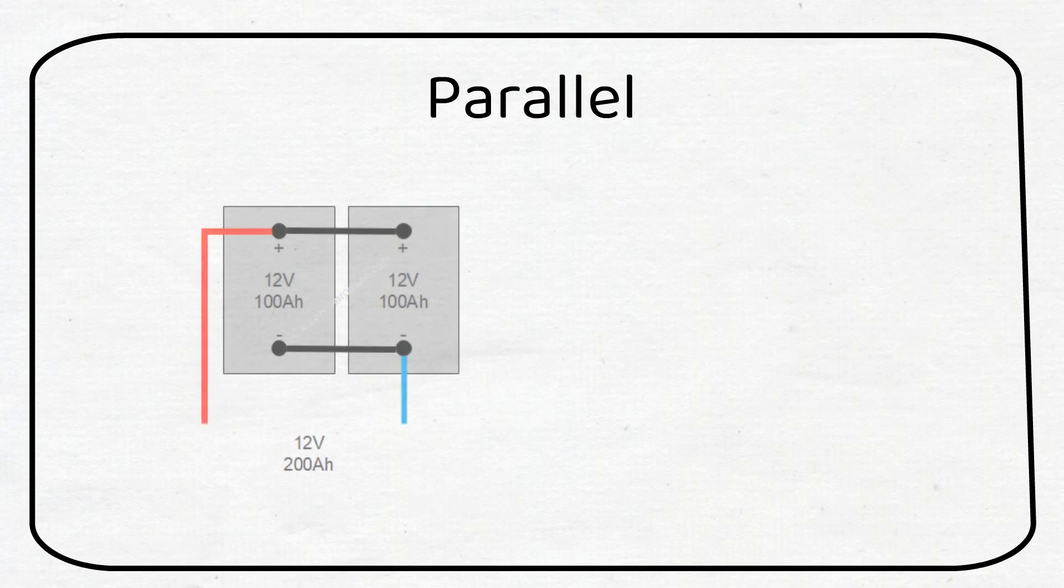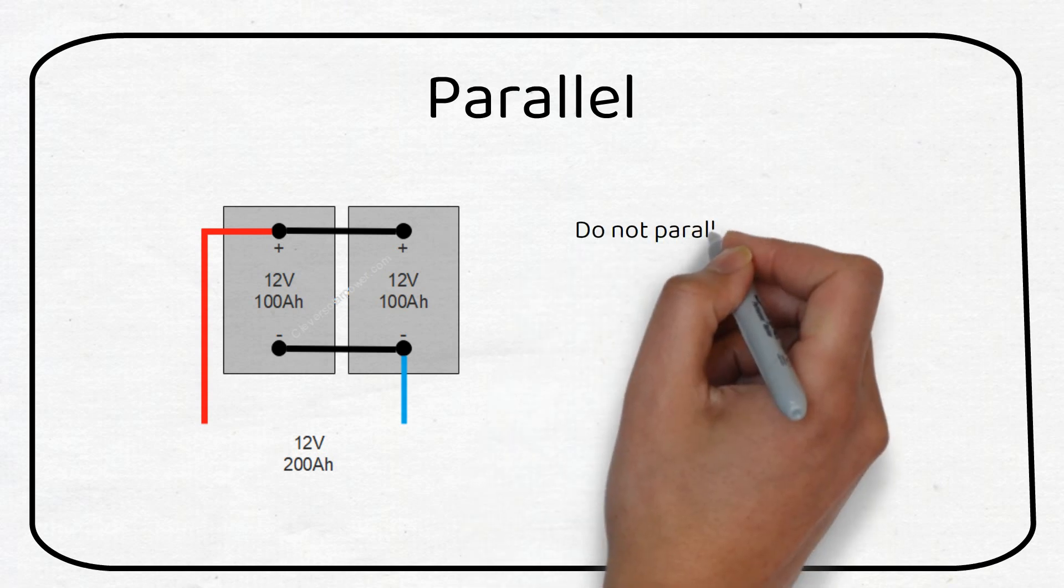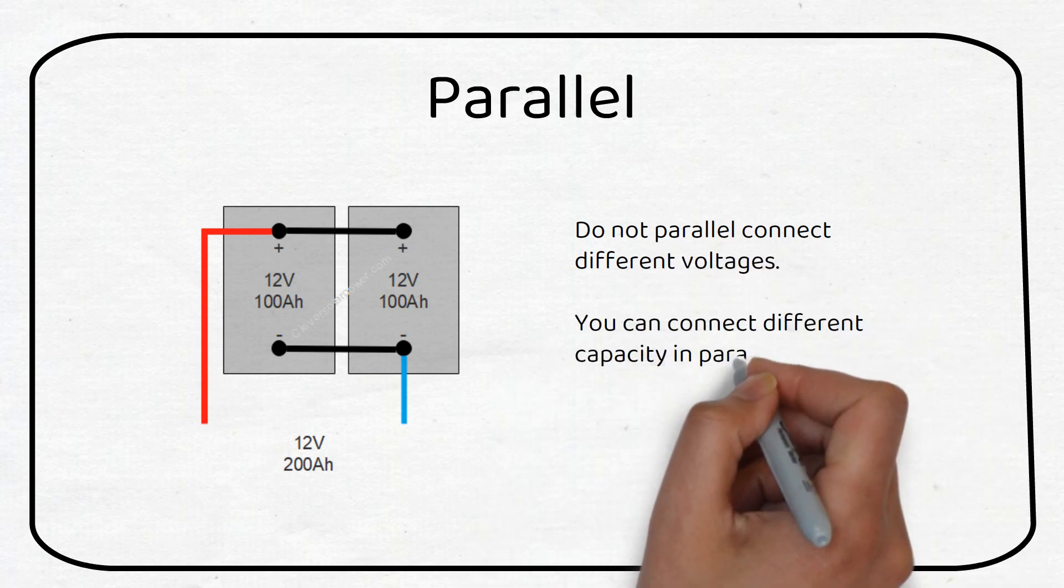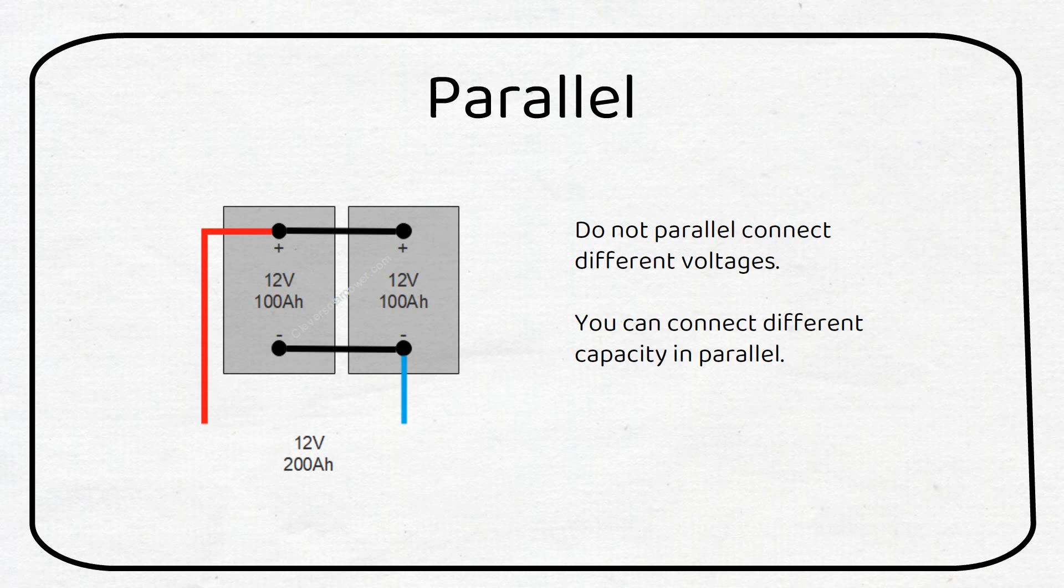If we wire our batteries in parallel the capacity will increase while the voltage stays the same. If we take the same batteries we will have 12 volts and 200 amp hours. Do not parallel connect different voltages. Different capacity batteries can be connected in parallel if they have the same chemistry.